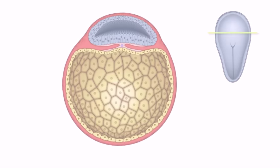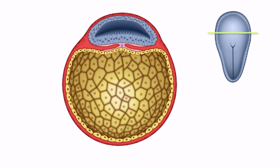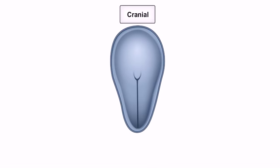The first event of neurulation is the formation of a thickened area of cells called the neural plate. The neural plate forms at the cranial end of the embryo and grows in a cranial to caudal direction.